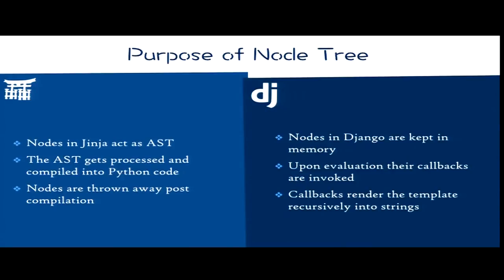The purpose of the node tree that gets created from the parsing stage is also different. In Jinja, you end up with a node tree that gets compiled into bytecode, and then the nodes are thrown away. Whereas in Django the nodes stay around forever. That causes quite a bit of confusion for people coming from Django templates who try to do something in Jinja, because Jinja does have extensions but the nodes they generate are not available at runtime — so you can't do clever things like find other nodes that surround you to figure out where you're located.